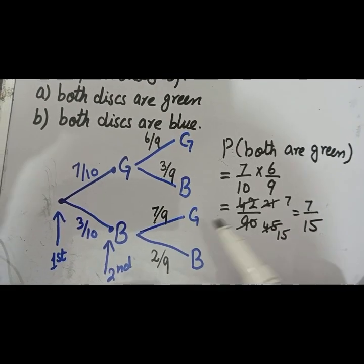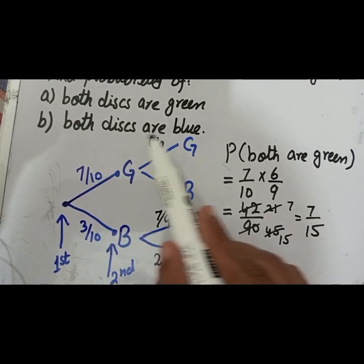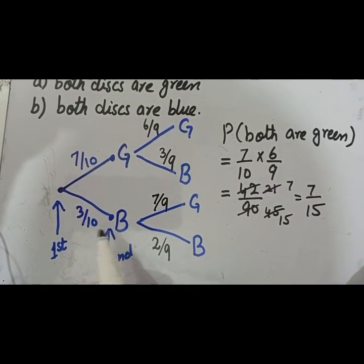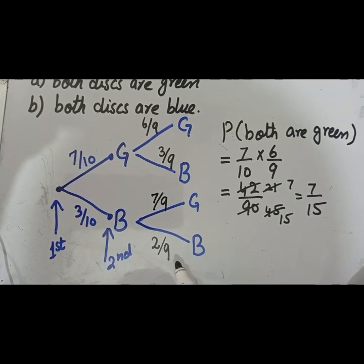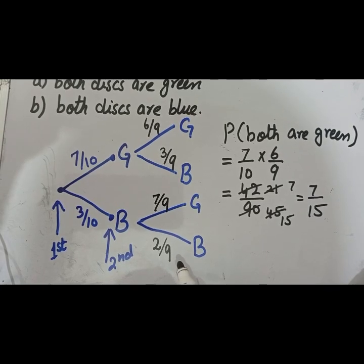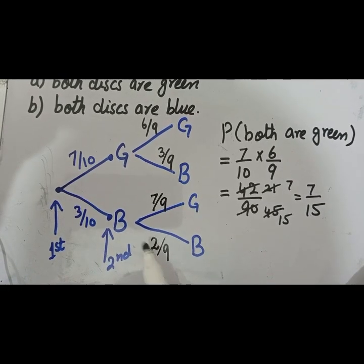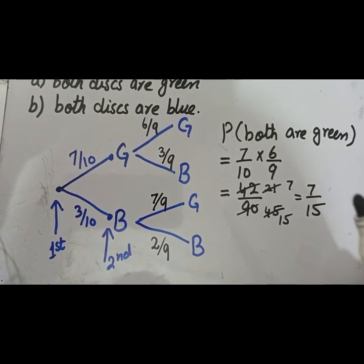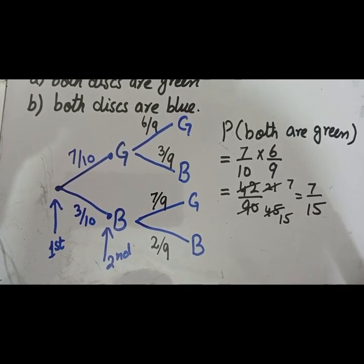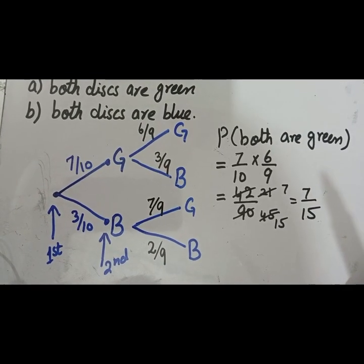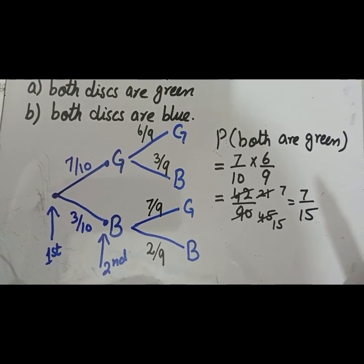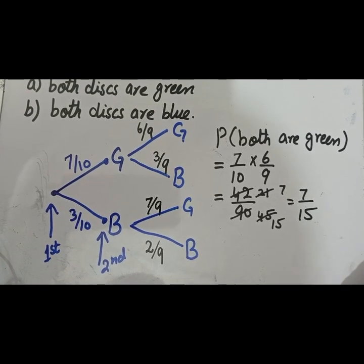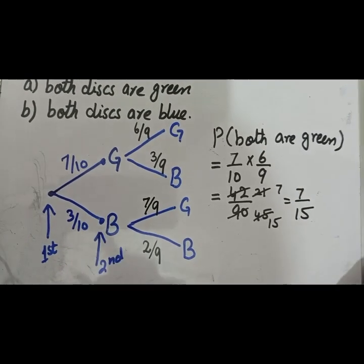Similarly, the probability that both discs are blue is 3/10 multiplied by 2/9, which gives 6/90. After simplification, you get 1/15. Hope you are enjoying the video — please subscribe to our channel and don't forget to like this video. Have a good day ahead.